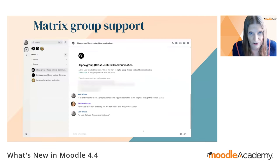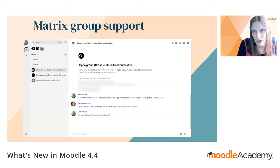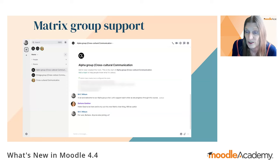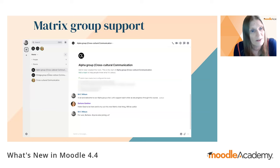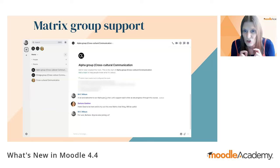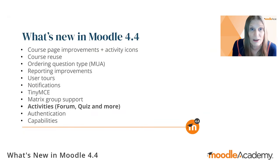In Moodle 4.4, if your site has a Matrix server connected, teachers could previously have a Matrix room attached to their course for teachers and students to chat informally. New in 4.4 is that if a teacher uses groups in their course, group rooms will be created within Matrix for those groups to access. For example, an alpha group and an omega group would each have their own Matrix or Element chat room.